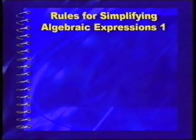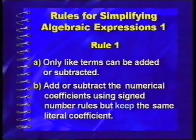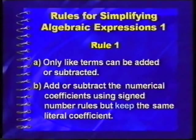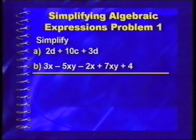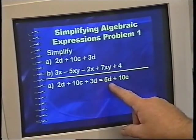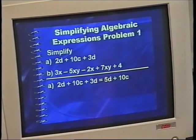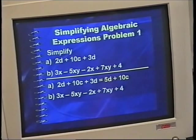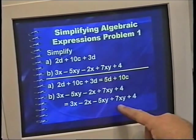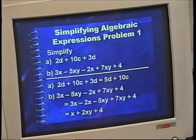That's rule one. When you add or subtract, you keep the same literal coefficient and add or subtract the numerical coefficients. For example, 2D plus 10C plus 3D: we add 2D and 3D to get 5D, but we can't simplify the 10C, so the answer is 5D plus 10C. In the next problem, 3X minus 5XY minus 2X plus 7XY plus 4: the 3X and minus 2X combine, the XY terms combine, and the final simplification is X plus 2XY plus 4.